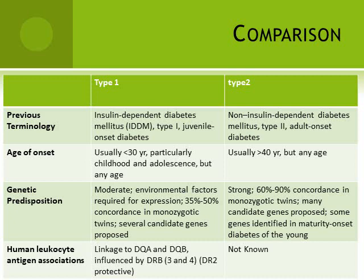Regarding genetic predisposition: for type 1 it is moderate, and environmental factors are required for expression of the disease — 35 to 50 percent concordance in monozygotic twins. For type 2 the genetic association is quite strong — about 90 percent concordance in monozygotic twins — clearly indicating that genetic predisposition for type 2 is much stronger than for type 1. HLA association: linkage to DQA and DQB, influenced by DRB3 or 4, is seen in type 1, but no HLA association is seen in type 2.